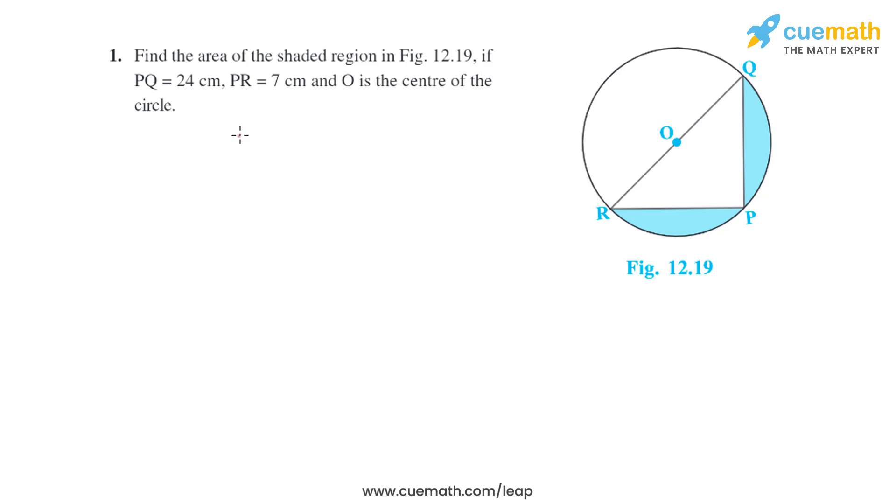Question 1 of this exercise says find the area of the shaded region in figure if PQ equals 24 centimeters, PR equals 7 centimeters, and O is the center of the circle.